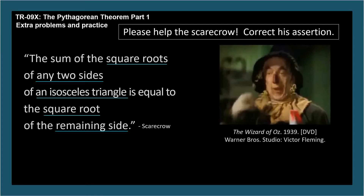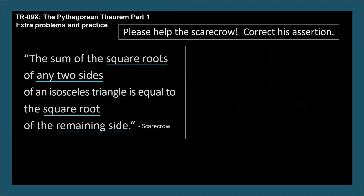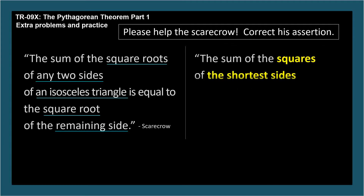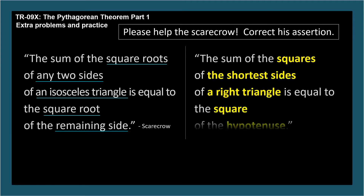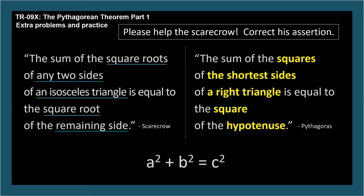The correct statement: the sum of the squares of the two shorter sides of a right triangle is equal to the square of the hypotenuse. That is, a² + b² = c², where c is the length of the hypotenuse.